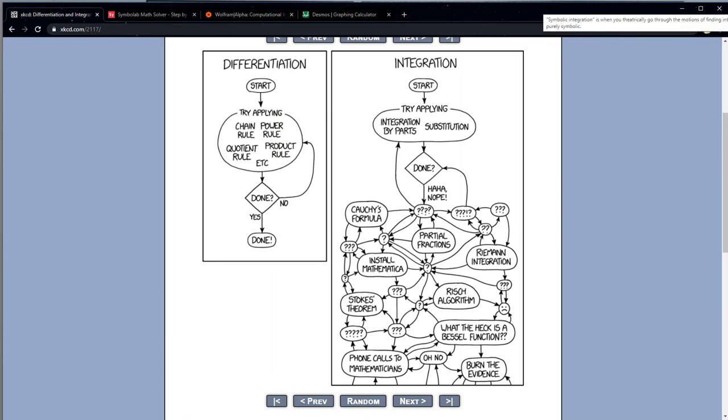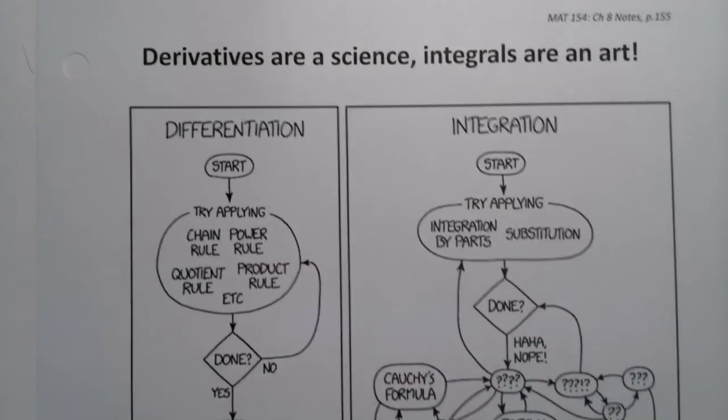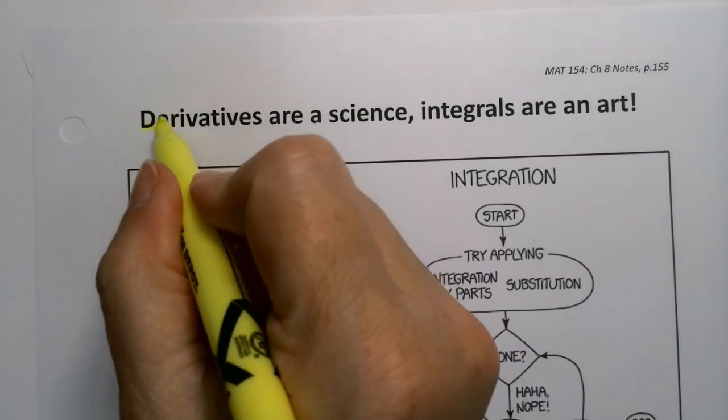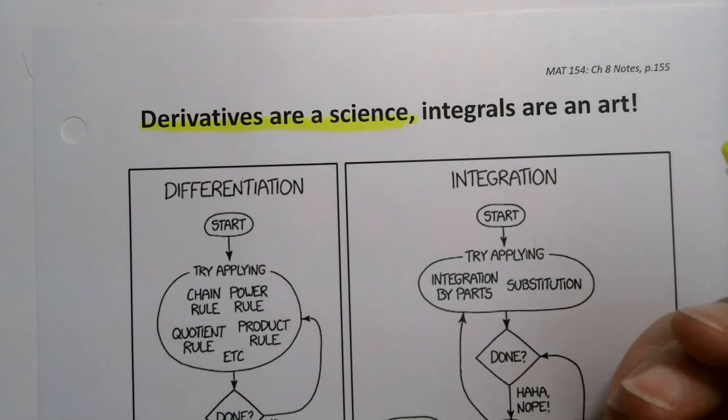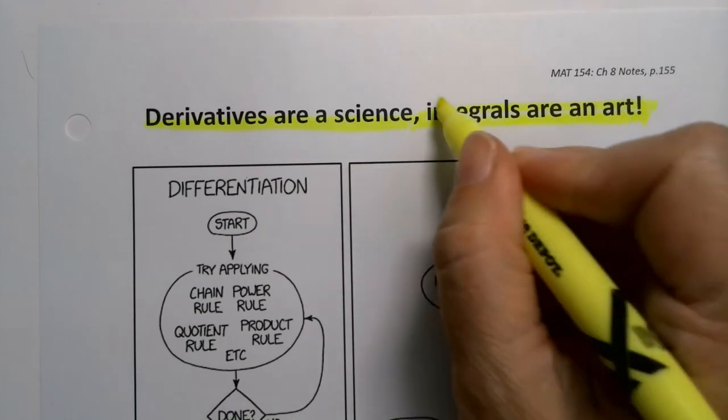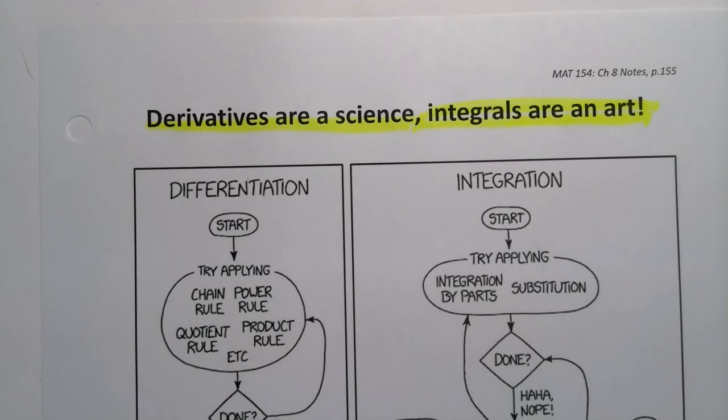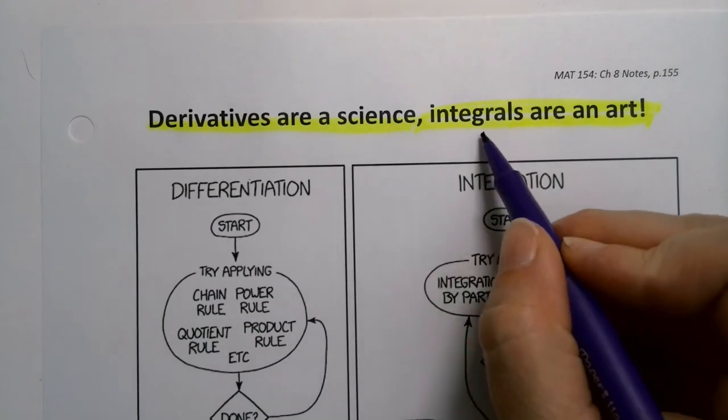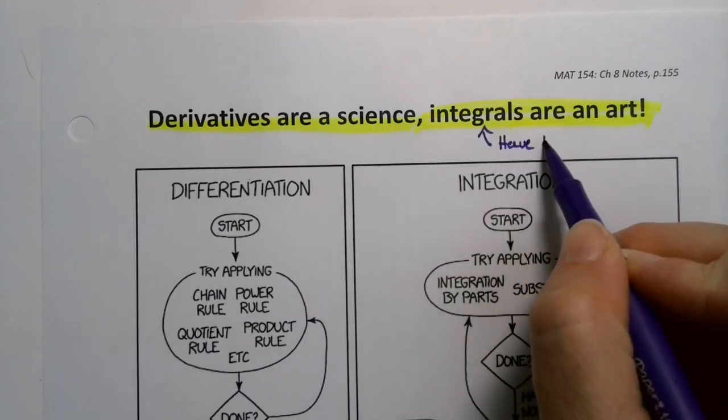And then integration is more of an art. So you try integration by parts and substitution. Like those are your big ones. And then, you can see, partial fractions, Riemann integration, that's numerical that they're talking about, phone calls to mathematicians, burn the evidence, install Mathematica. Those computer programs will do things for you. Stokes theorem is actually a calculus three theorem that you'll learn eventually. So it's much more of an art form. Derivatives are actually really easy because they're very straightforward. They're a science. Integrals are an art. You try and try and try and try some more until you find the right thing that's going to work. They are actually much more difficult. So you have to persevere and keep trying no matter what.